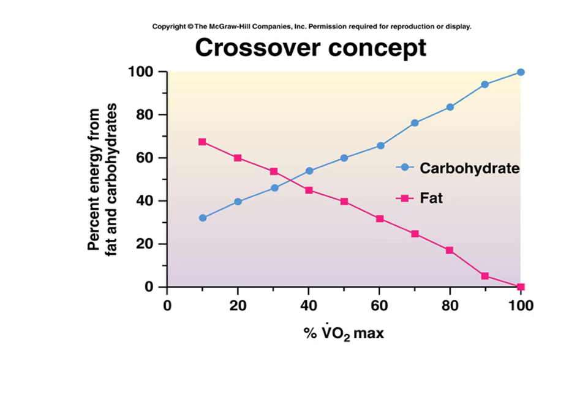As we start to work and intensity increases — looking at the graph where the bottom axis shows percentage of VO2 max (essentially aerobic capacity) — we see a decline in fat use from zero to 100%, because there's less oxygen available to break it down. There's an inverse relationship with carbohydrate use, which starts low at low intensity but rises with intensity. At 100% VO2 max, carbohydrates are the only fuel the body can use because there is insufficient oxygen to break down fats. This is called the crossover concept.